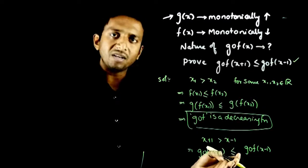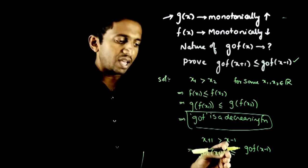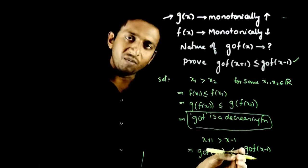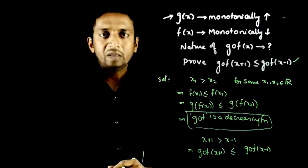This is because gof is a decreasing function. Here we have less than or equal to because it's not strictly decreasing, so equality can also occur. Thank you.